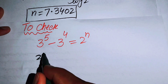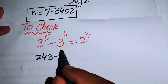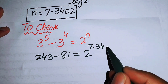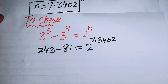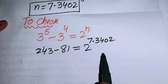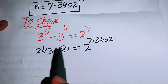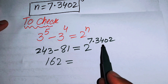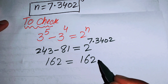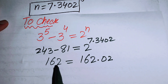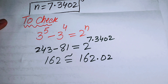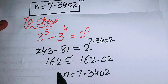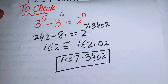We compute: 3 to the power of 5 equals 243, and 3 to the power of 4 equals 81, so the left side gives 243 minus 81 equals 162. On the right side, 2 to the power of 7.3402 equals approximately 162.02. Since 162 is approximately equal to 162, this confirms that n equals 7.3402 is the solution.